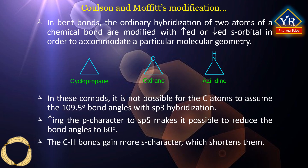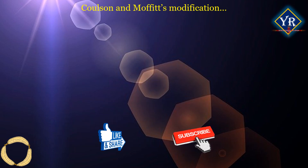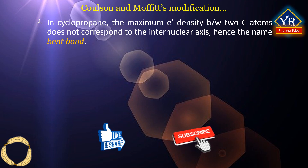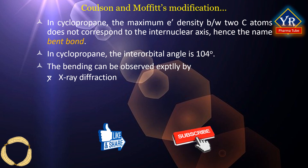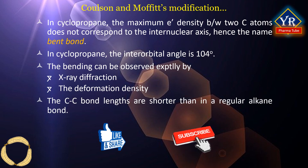At the same time, the carbon-to-hydrogen bonds gain more S character, which shortens them. In cyclopropane, the maximum electron density between two carbon atoms does not correspond to the internuclear axis — hence the name bent bond. In cyclopropane, the interorbital angle is 104 degrees. This bending can be observed experimentally by X-ray diffraction of certain cyclopropane derivatives. The deformation density is outside the line of centers between the two carbon atoms. The carbon-carbon bond lengths are shorter than in a regular alkane bond.